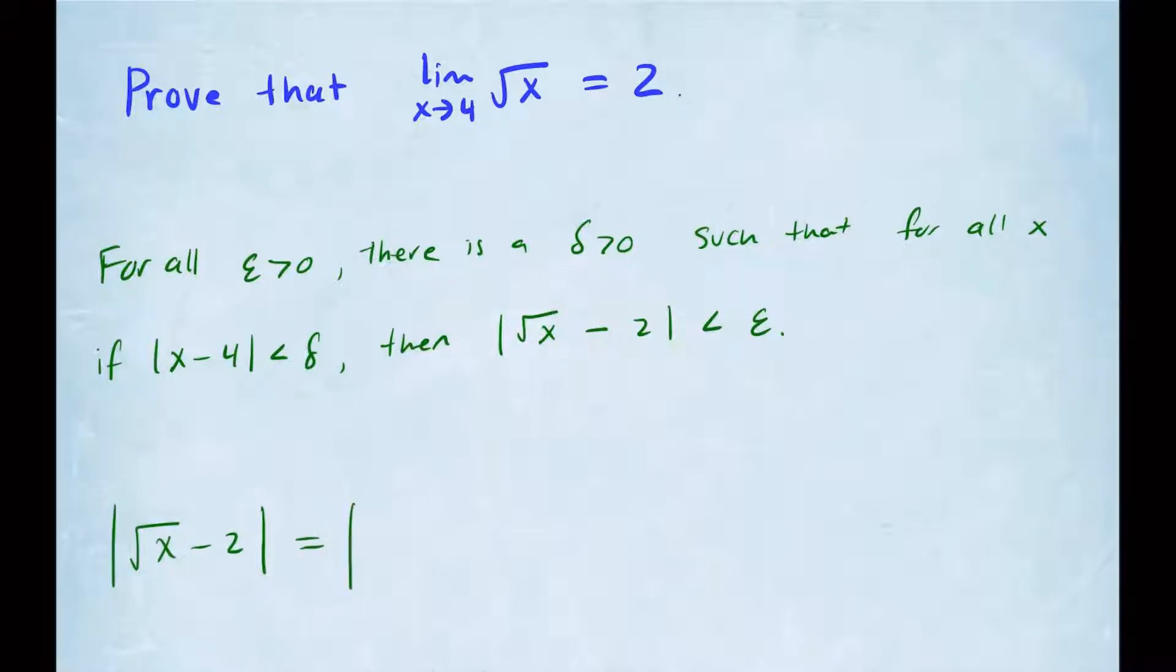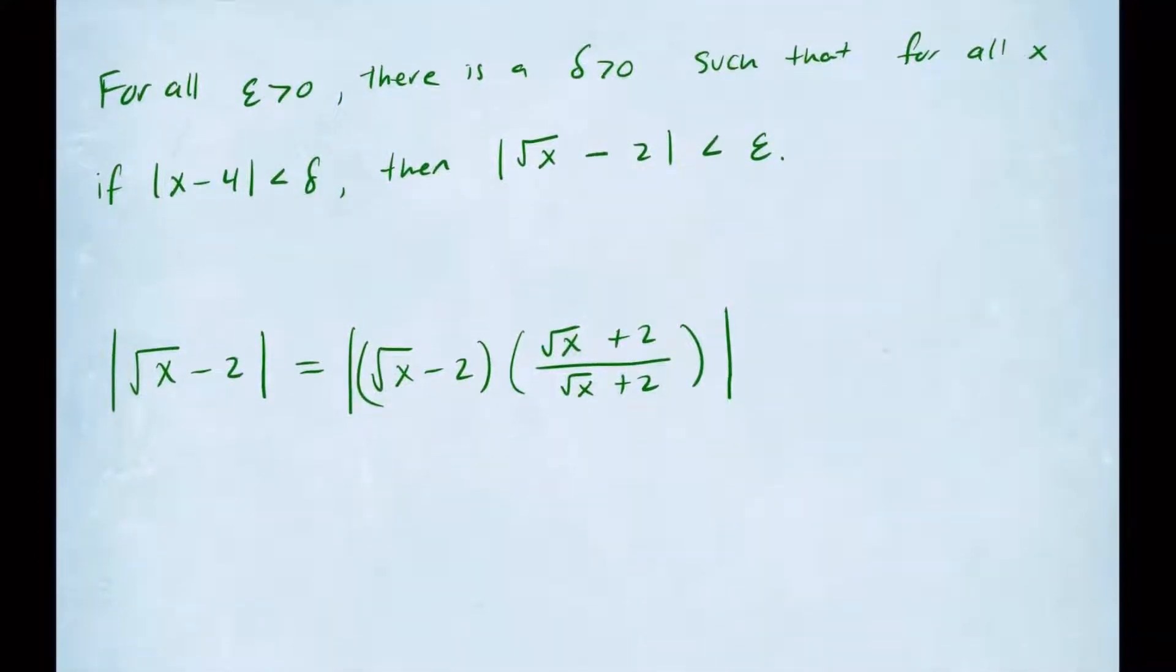So here's what I can rewrite this as. This is exactly equal to square root of x minus 2, and I'm going to multiply this by its conjugate which is square root of x plus 2 over square root of x plus 2. By doing that I didn't change the question because multiplying by 1 keeps it the same. If I simplify this further, on the numerator you're going to get square root of x minus 2 times square root of x plus 2, and on the denominator you get square root of x plus 2.